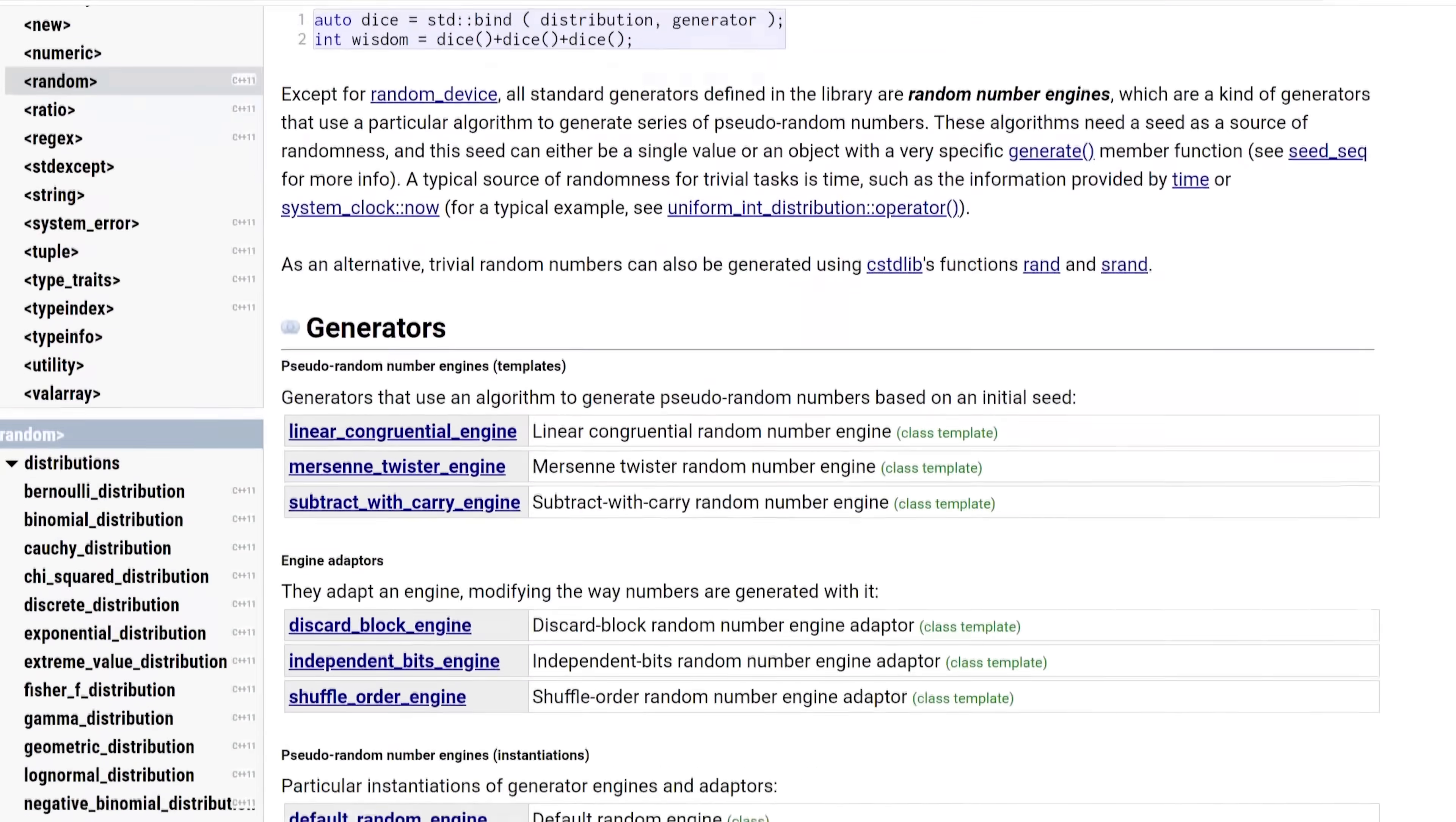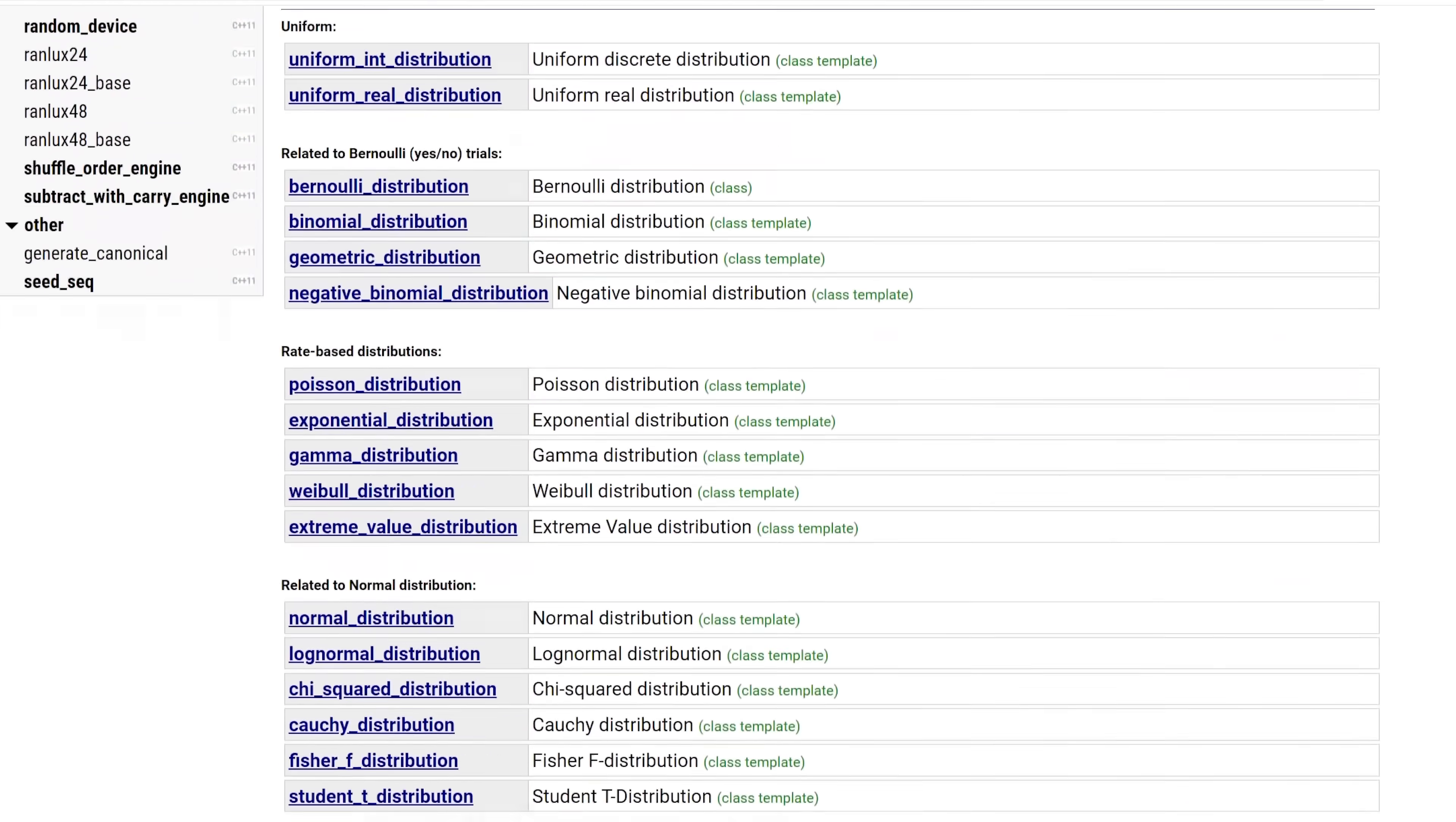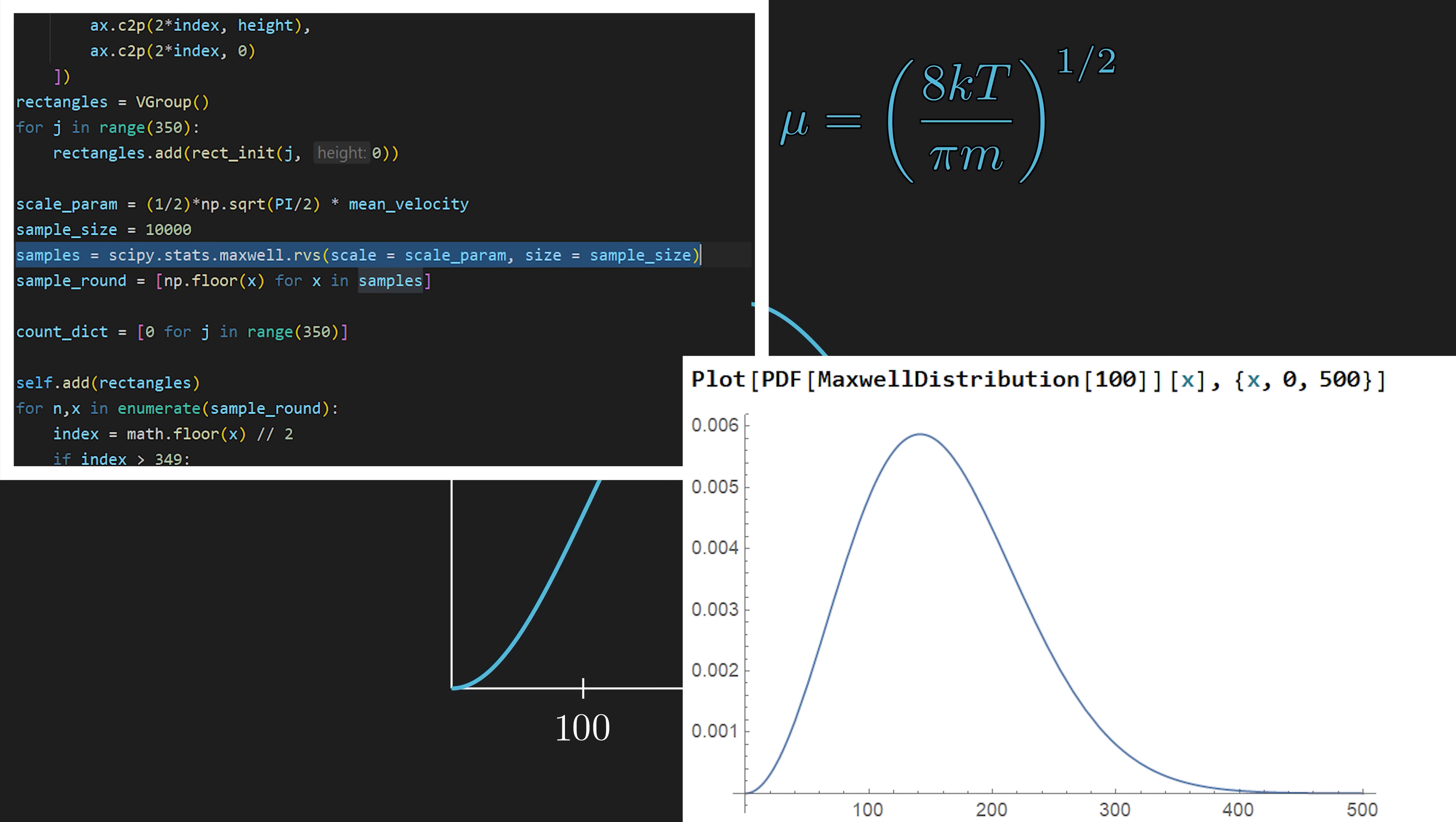This is an example of a probability distribution that is typically not found in the standard library of most programming languages. You could find a specialized math library like SciPy or a mathematics software like MATLAB or Mathematica to make a random number generator of this distribution.